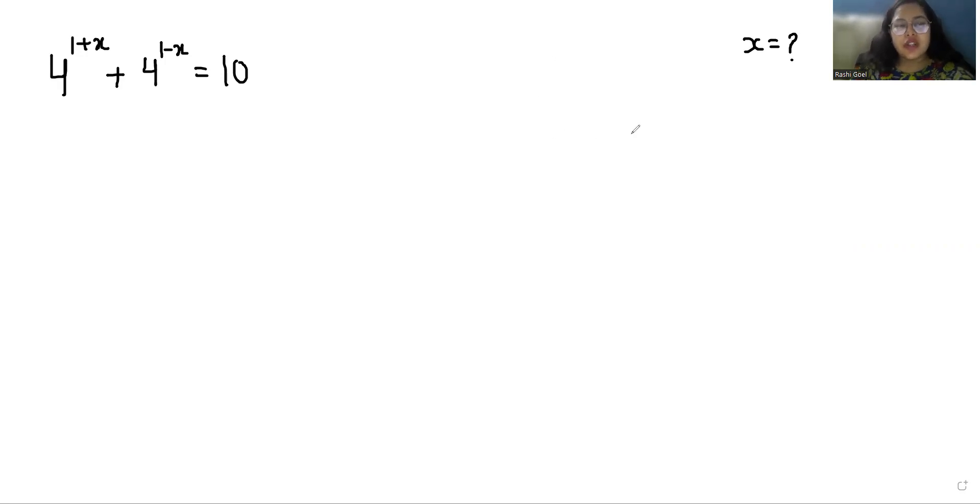So let's start with today's video solution. I'm going to use two famous exponent rules: x^(n+m) can be written as x^n times x^m, and x^(n-m) as x^n divided by x^m.